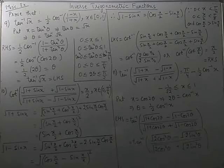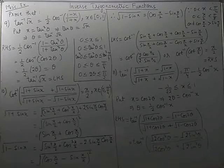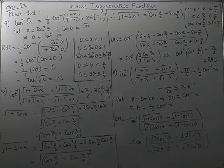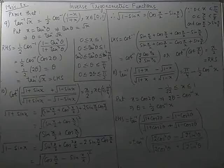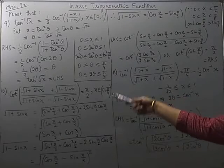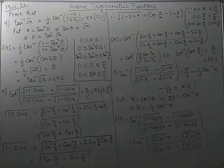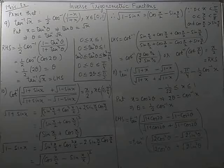If x were instead from π/4 to π/2, then sin x would become greater than cos x. In that case we would have written √(1 − sinx) as (sin(x/2) − cos(x/2))². So the choice of which term is greater plays an important role in deciding the form of the difference. When it is about addition it hardly makes any difference, but when it is about subtraction you have to be very careful.